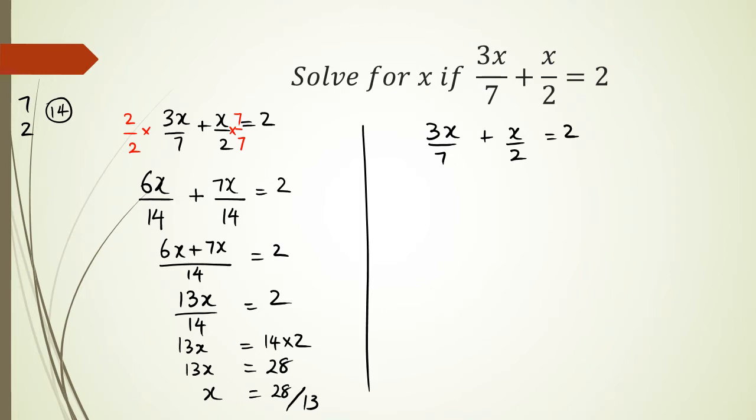So the first number I want to get rid of is the 7, so I'm going to multiply all the terms by 7. And what that means is, I'm going to end up with an equation like this, where I've got 3x plus 7x over 2 equals 14.